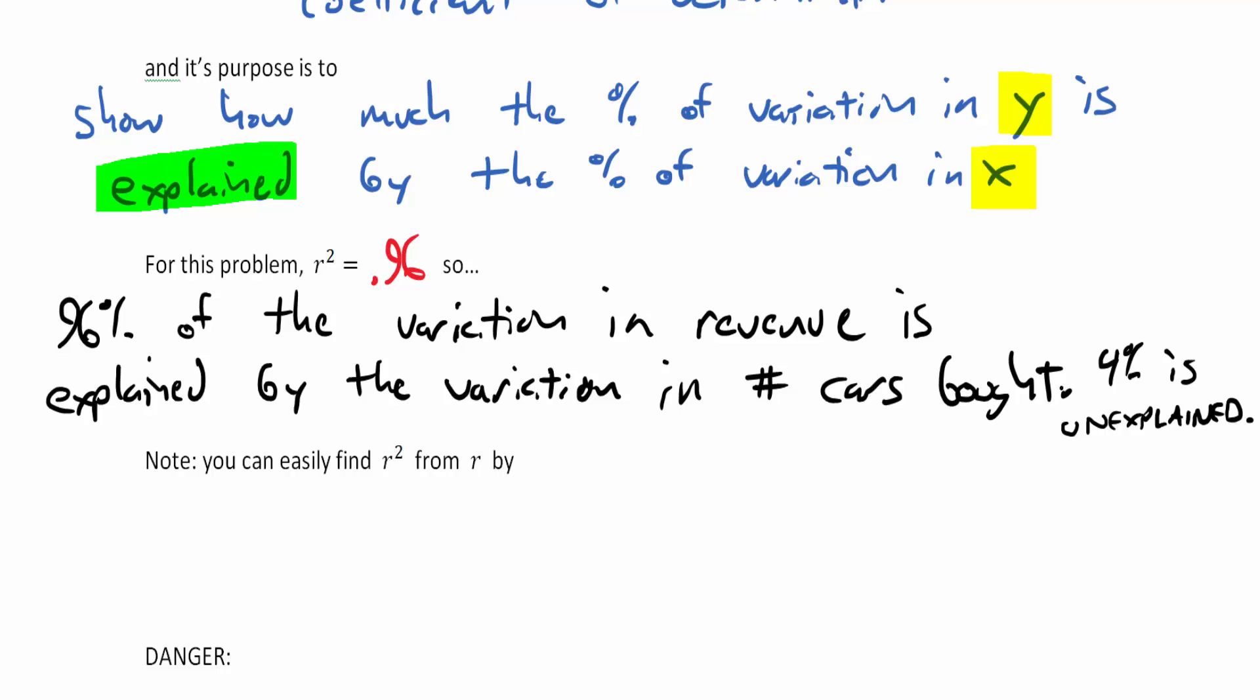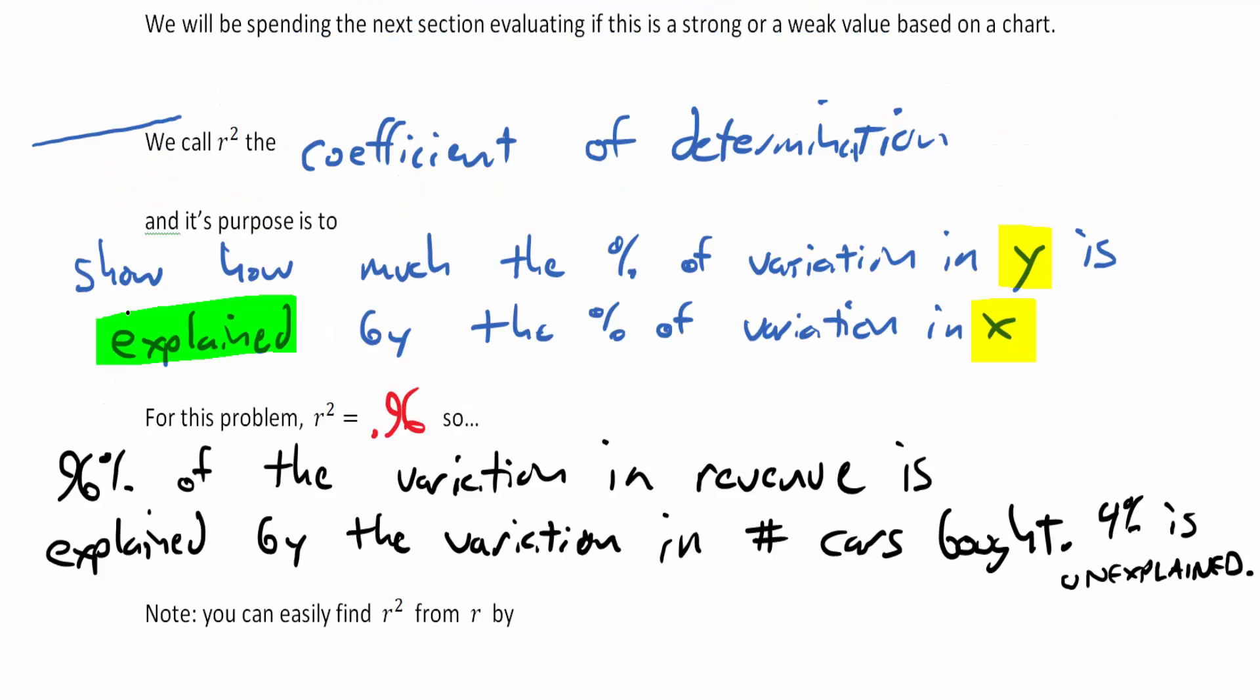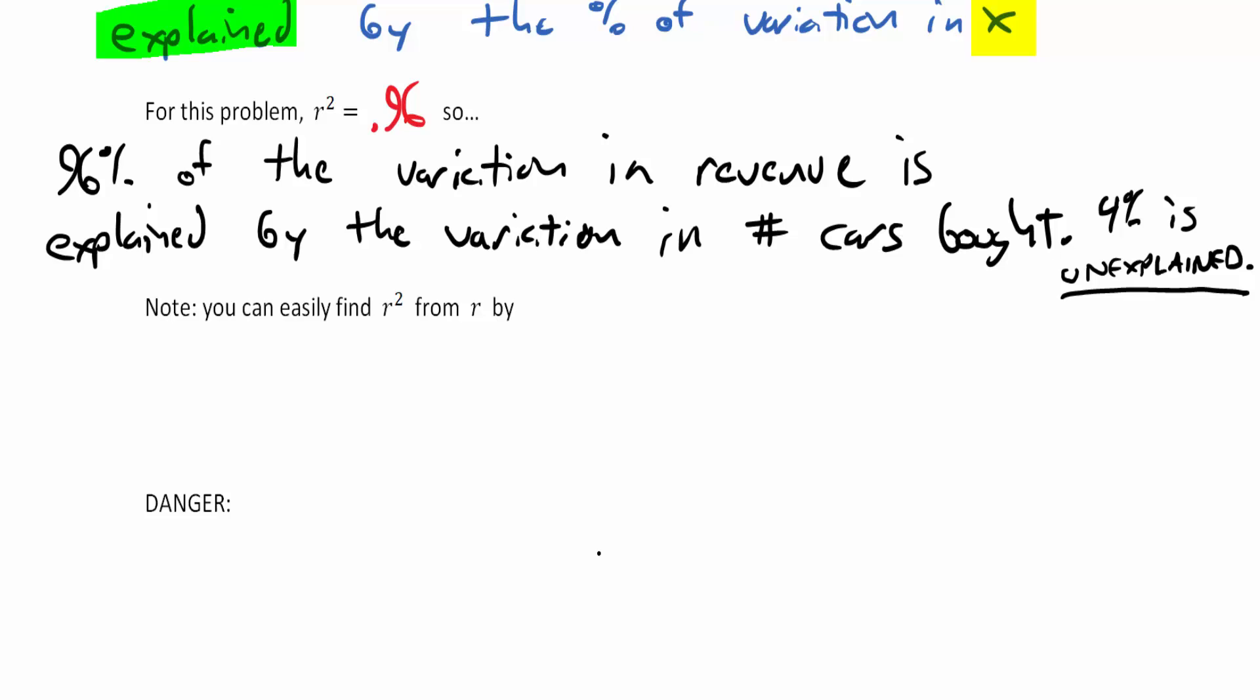But that is how we do the coefficient of determination. You get your r-squared value, you follow the format of seeing how much the percent of variation in y is explained by the variation in x, and then take your complement for the unexplained, really short sentence there.